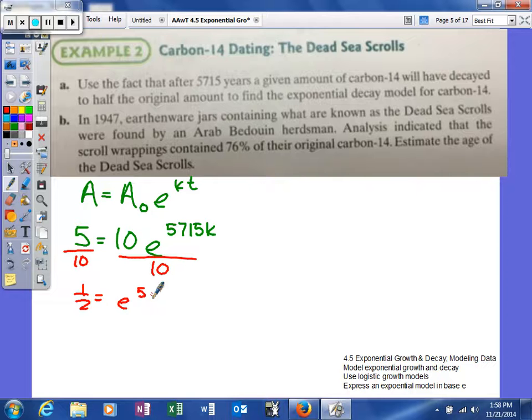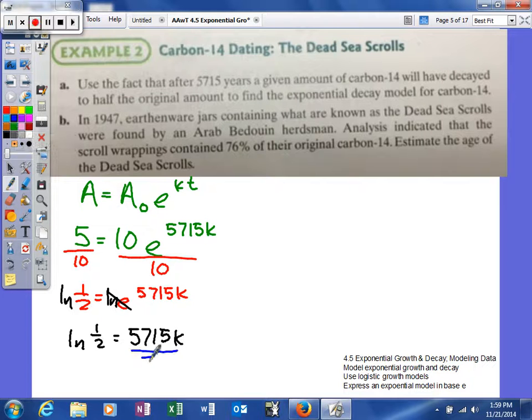And then what we're trying to do is obviously figure out what k is. Because once we can figure out what k is, we'll use that k later in our problem to help us answer part b. So this will cancel, and we'll get the natural log of one half is equal to 5,715k. So I'm going to now go ahead and divide by 5,715 on both sides.